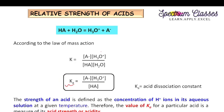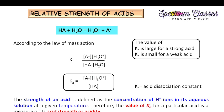The strength of an acid is defined as the concentration of H+ ions in aqueous solution at a given temperature. Therefore the value of Ka for a particular acid is a measure of acid strength or acidity. If the value of Ka is large, the acid is strong. If the value of Ka is small, the acid is weak.